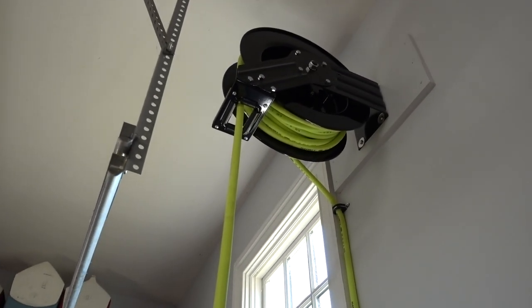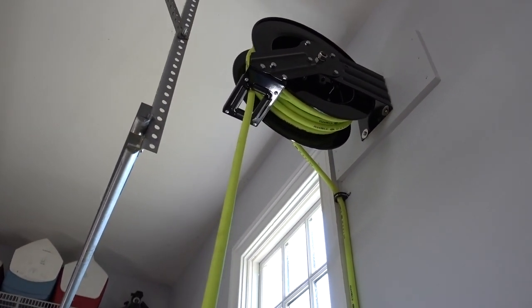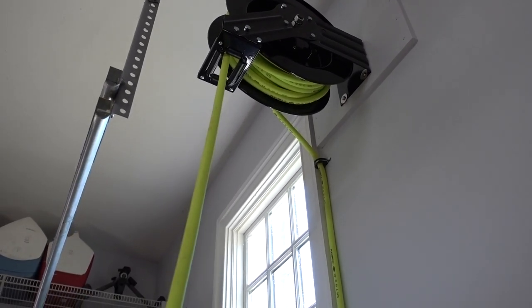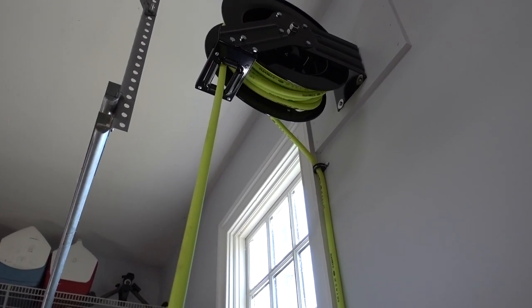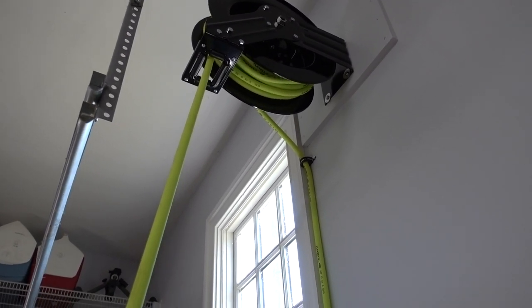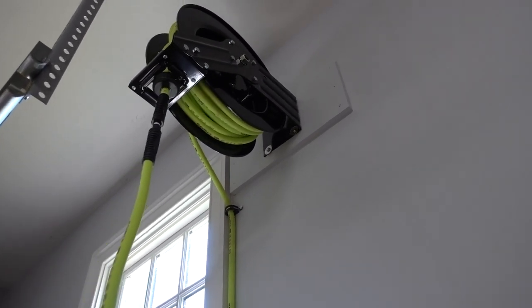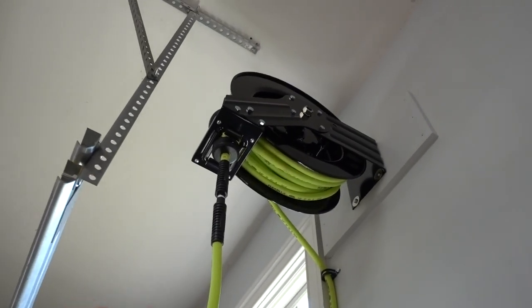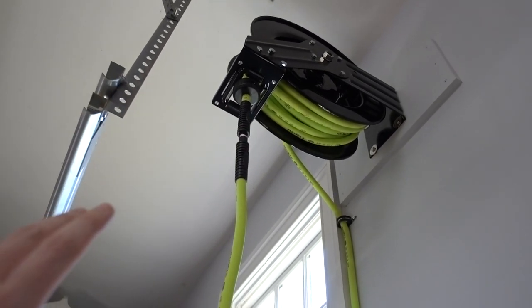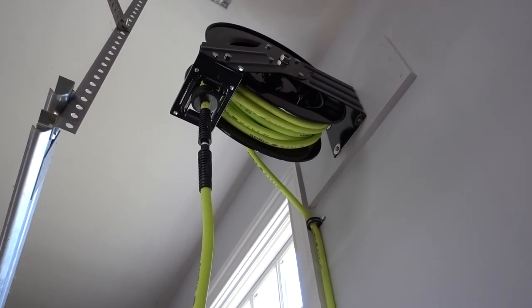So the hose reel works just like a normal one where it has the clicks where you can stop and all you do is you go past that final click and you want it to reel back up and then you just let it go and boom, it's up there. I love that far more than having to roll the hose reel up every time. That's what I was doing before and I just didn't like that.